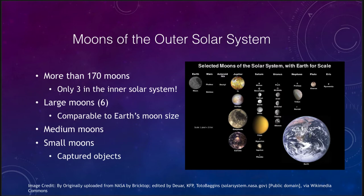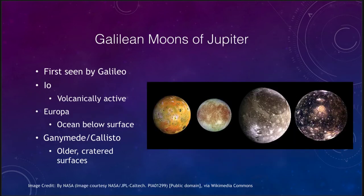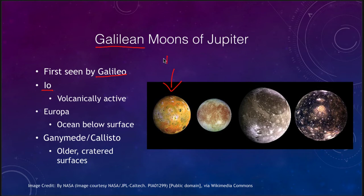Let's start by looking at the Galilean moons of Jupiter — the moons that were seen by Galileo. He just saw them as little dots of light orbiting Jupiter, but they were the first objects ever seen that were not orbiting either the sun or the Earth, first seen in the early 1600s. There are four of them. Io, the closest one, is volcanically active — we are actually seeing volcanoes. We do not see any impact craters on it because it is constantly being resurfaced. It is the most volcanically active object in the solar system.